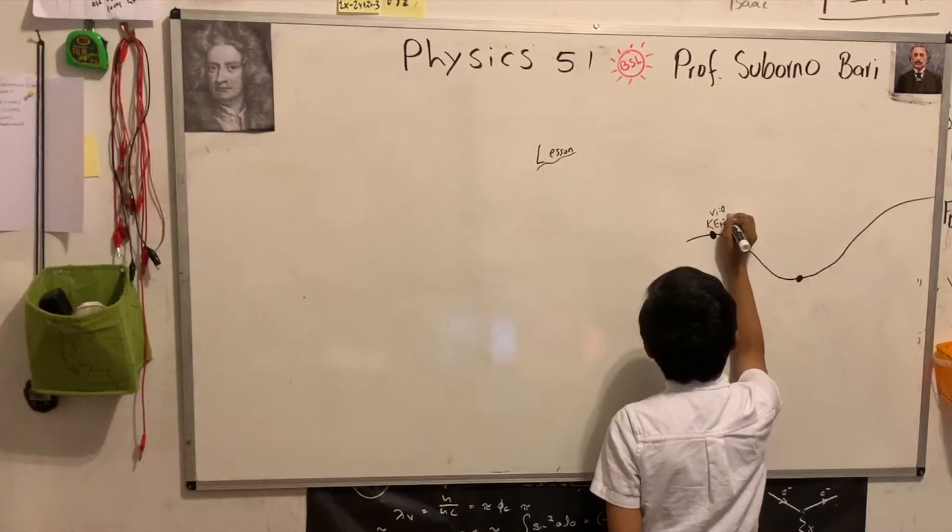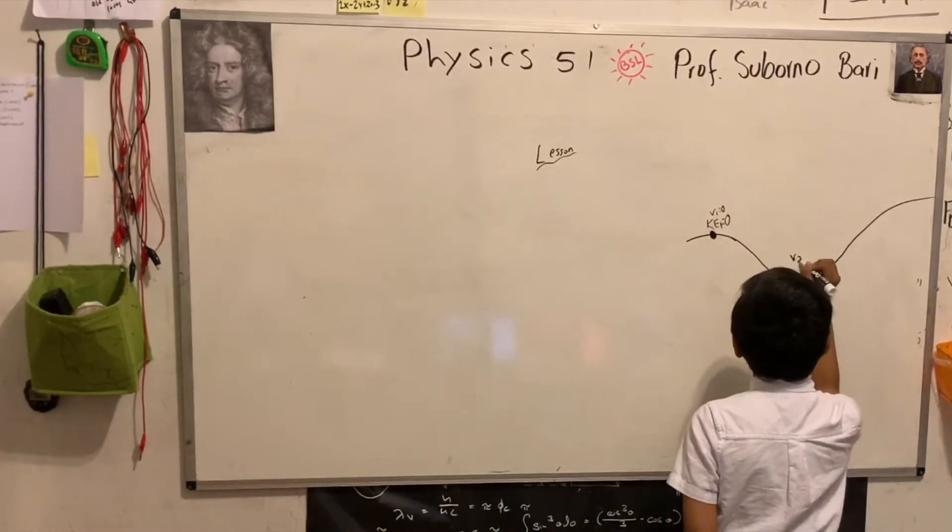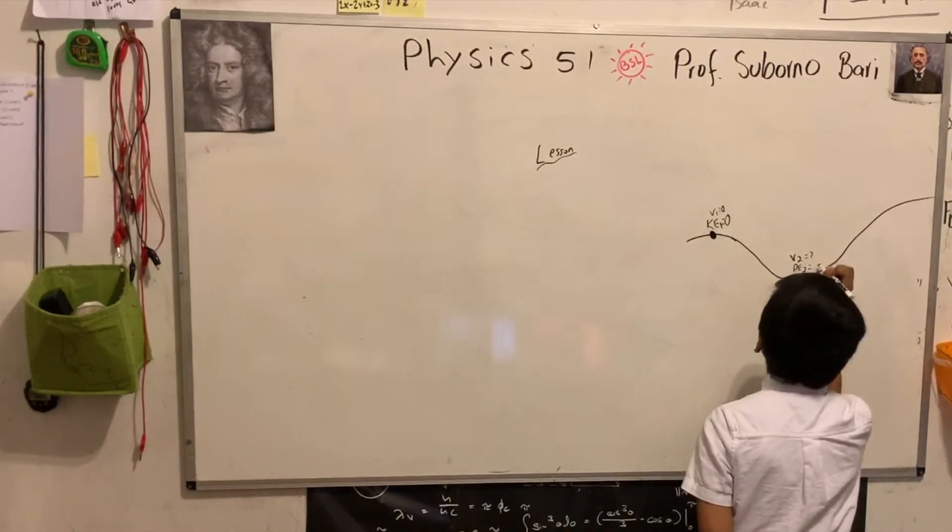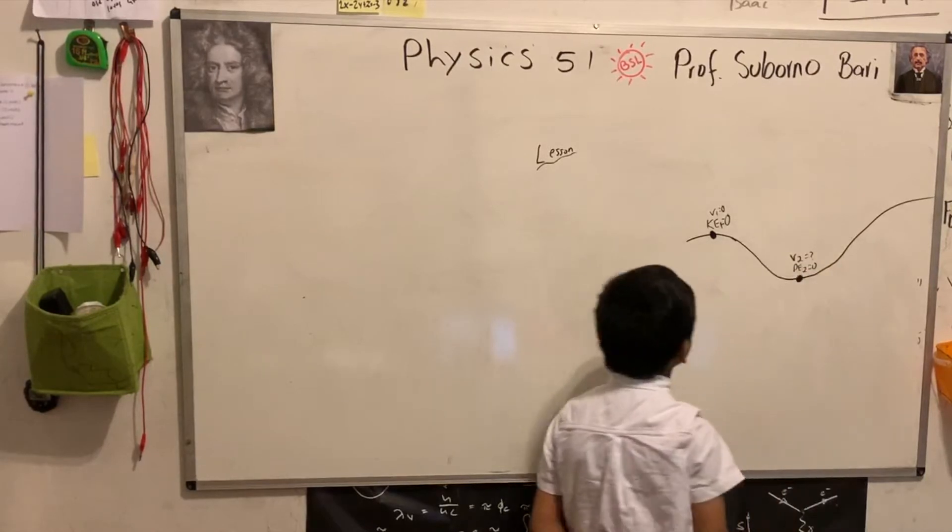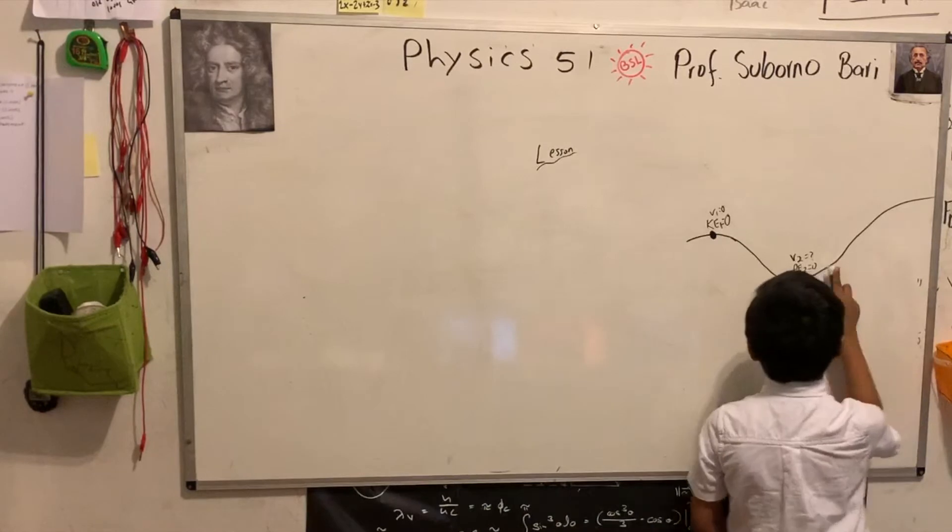V1 here is zero, thus KE1 would also be zero. Here, V2 is some unknown number, but PE here is definitely zero. So first, we want to find this unknown number.